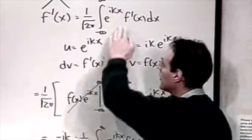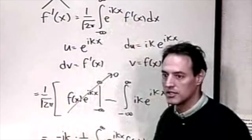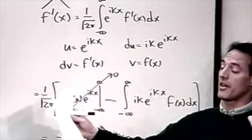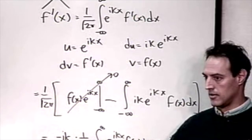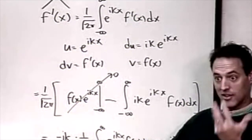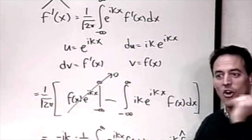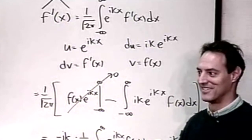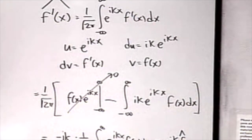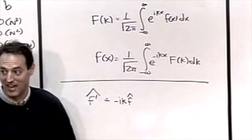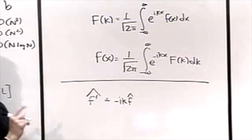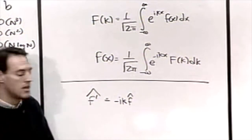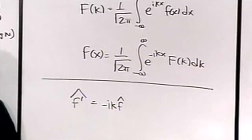It's also clear why periodic BCs arise: we're expanding in sines and cosines, which are periodic on some domain from -L to L. You take a function and represent it in sines and cosines. We have a relationship between the derivative and the Fourier transform of the function itself — and we can generalize this.